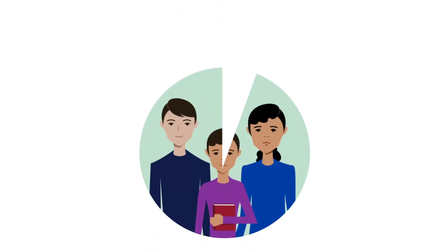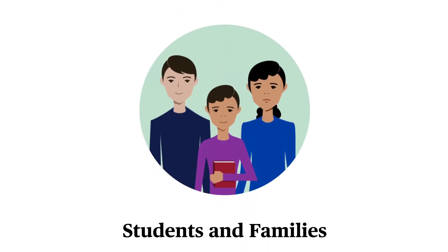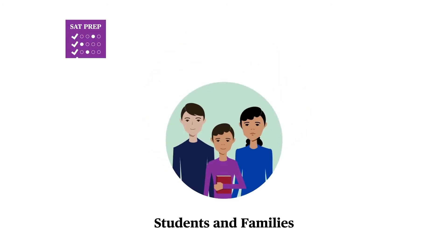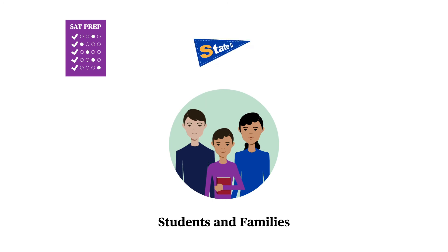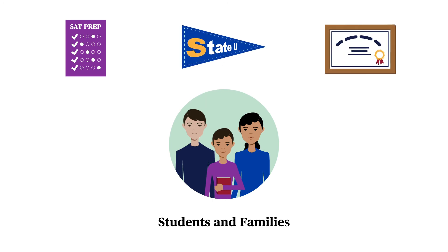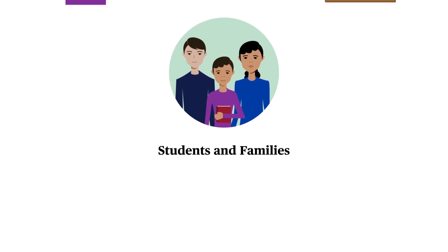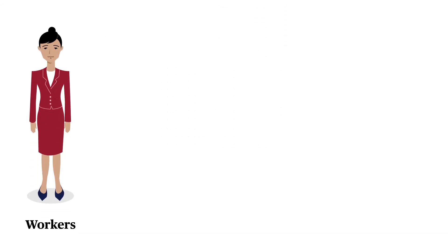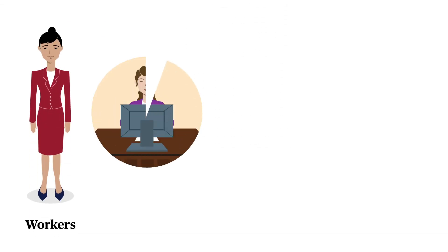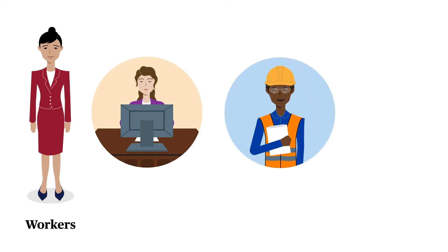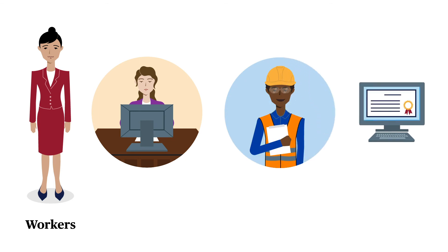By reviewing information available from the SLDS, students and their families can determine which early childhood programs, education services, schools, or degree programs will help them meet their academic and professional goals. Workers can decide which training programs and certifications will help them advance their careers, based on wage and employment information from others with similar credentials.